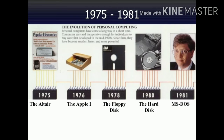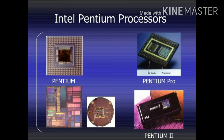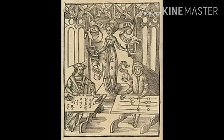In 1980, Microsoft Disk Operating System, MS-DOS, was born. In 1981, IBM introduced a personal computer as a PC for home and office use. Three years later, Apple gave us the Macintosh computer with its icon-driven interface.